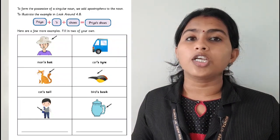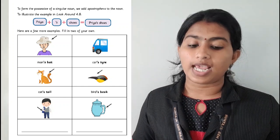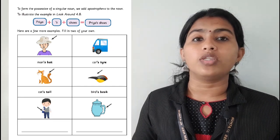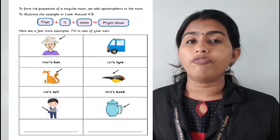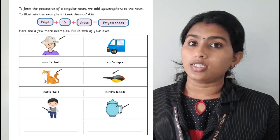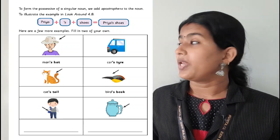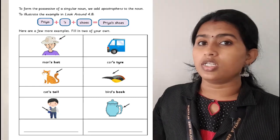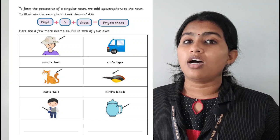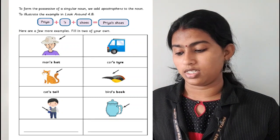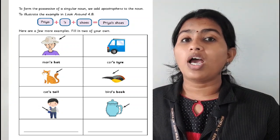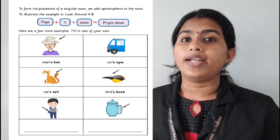Possessive nouns show a relationship of belonging between one thing and another. The punctuation mark apostrophe is used to indicate this belonging or ownership. To form the possessive of a singular noun, we add apostrophe plus S to the noun. For example: Priya plus apostrophe S plus shoes equals Priya's shoes — the shoes belong to Priya. Here are a few more examples; fill in two of your own in the provided space.